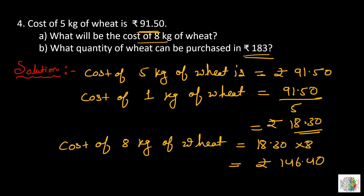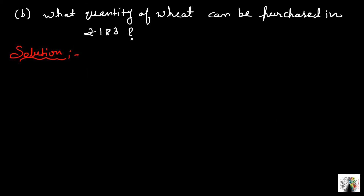It means agar hume 8 kg of wheat purchase karne hai, toh we have to pay rupees 146.40. Now we will discuss part B of this question: what quantity of wheat can be purchased in rupees 183? Similarly, hum pehle yeh find out karenge ki rupees 1 mein kitna wheat purchase kar sakte hain, then rupees 183 mein kitna wheat.